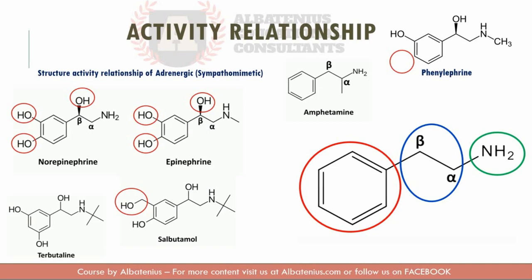Methyl or ethyl substitution on the alpha carbon decreases metabolism by monoamine oxidase (MAO). Comparing norepinephrine to amphetamine, there is an alpha-carbon substitution on amphetamine, which is why MAO does not metabolize amphetamine as effectively as it does norepinephrine.